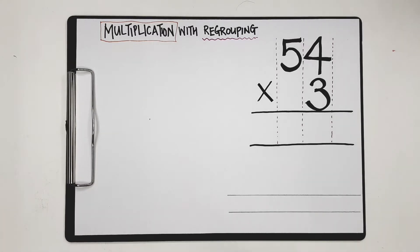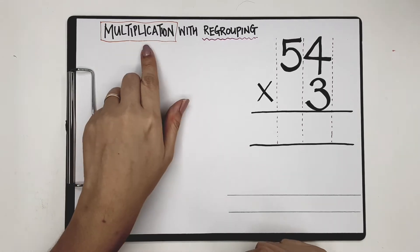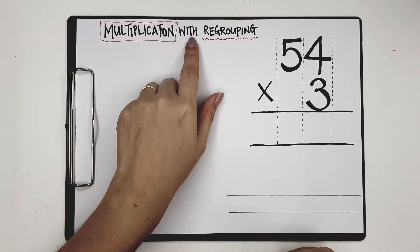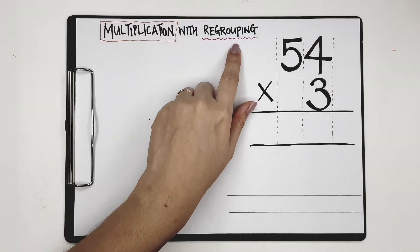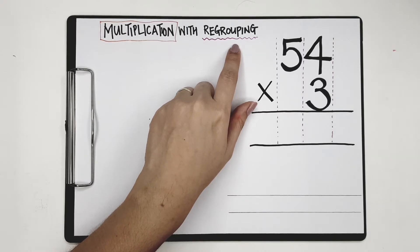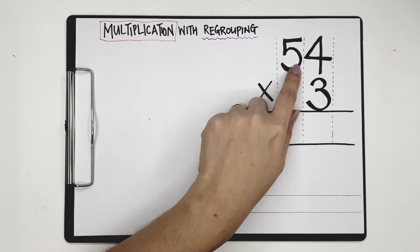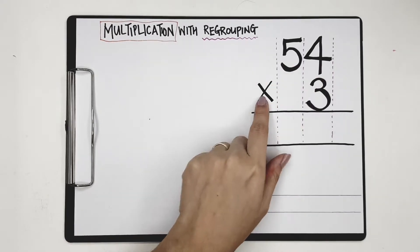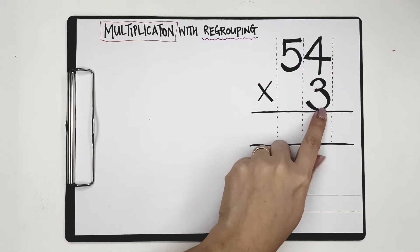Hello students, today we are going to be looking at multiplication with regrouping. The question that we are going to look at today is 54 times 3.